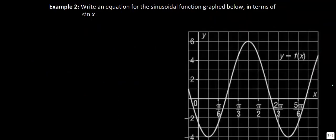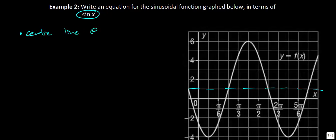Example two says: write an equation for the sinusoidal function graph below in terms of sine of x. The hint 'sine of x' matters — we know the graph of sin(x) goes through (0, 0), has amplitude 1, and period 2π. Looking at the graph, the distance from minimum to maximum looks like 4 from one side, 6 from the other, so the graph must have shifted up. Drawing the midline (blue dotted line), I can see it sits at y = 1, so d = 1.